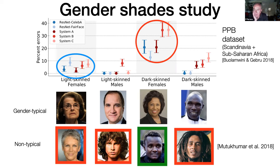We know that gender classification algorithms perform better on gender-typical hairstyles because they are trained on those — celebrities and so on. So we don't know if we're measuring a bias in the test set or a bias in the algorithm. This is a big problem caused by complicated correlations between different characteristics of these faces.